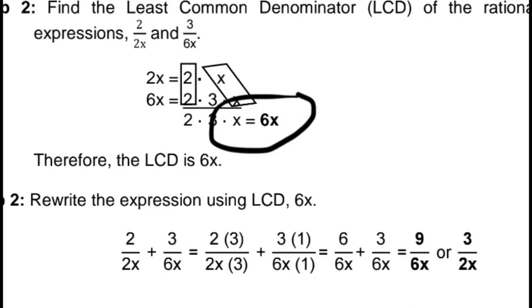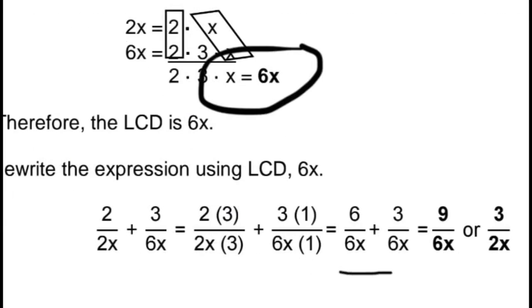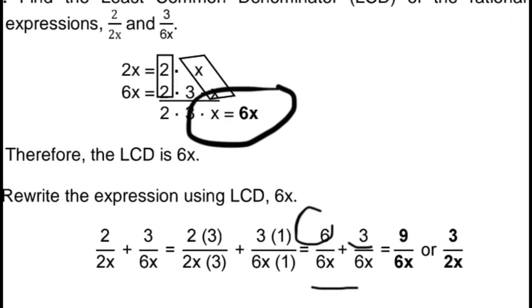Rewrite the expression using LCD 6x. Write the LCD as the denominator, then divide it by the denominator of the first term and multiply to its numerator, then do the same for the second term. So we have: 6x divided by 2x is 3, times 2 gives 6. Then 6x divided by 6x is 1, times 3 gives 3. So 6 over 6x plus 3 over 6x equals 9 over 6x. Then simplify: 9 divided by 3 is 3, and 6x divided by 3 is 2x. So the answer is 3 over 2x.